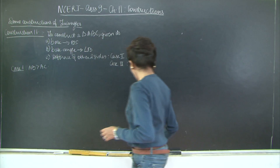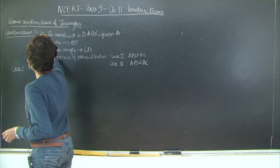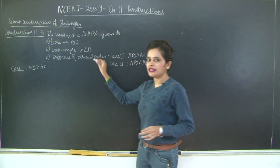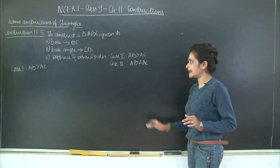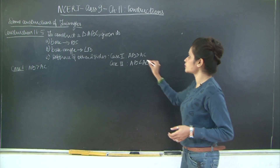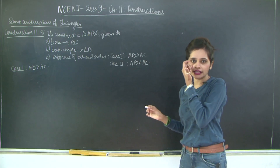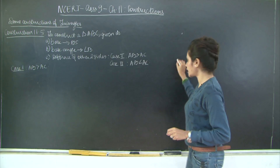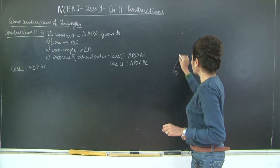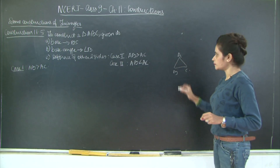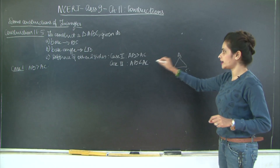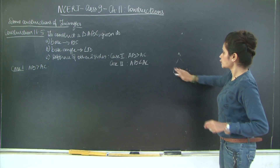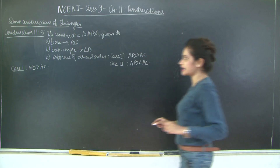This is construction 11.5, wherein you need to construct a triangle ABC given its base BC, base angle B, and the difference of the other two sides. The other two sides would be AB and AC, because one side BC is already given. When considering the difference, you have two cases: either AB will be greater than AC or AB will be less than AC. Let us consider the first case where AB is greater than AC.